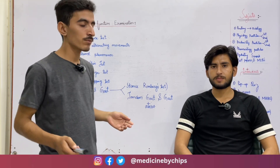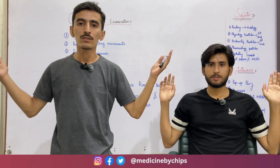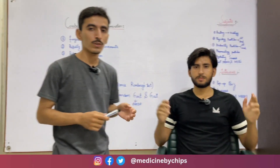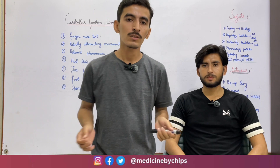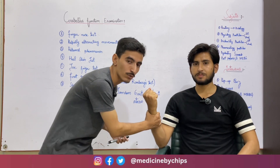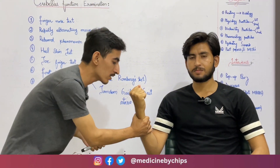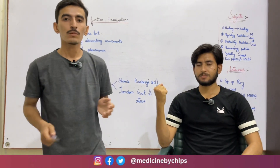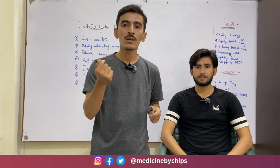Our third test is the rebound phenomenon test. We ask the subject to rapidly raise his arm from the side and then stop suddenly. A normal subject will be able to stop his arm, but in cerebellar disease there will be a delay in stopping. In the alternative method, we provide resistance to the forearm and ask the subject to flex it — when we release the resistance, a normal subject stops the forearm, but in cerebellar disease the arm may overshoot and hit his own face.